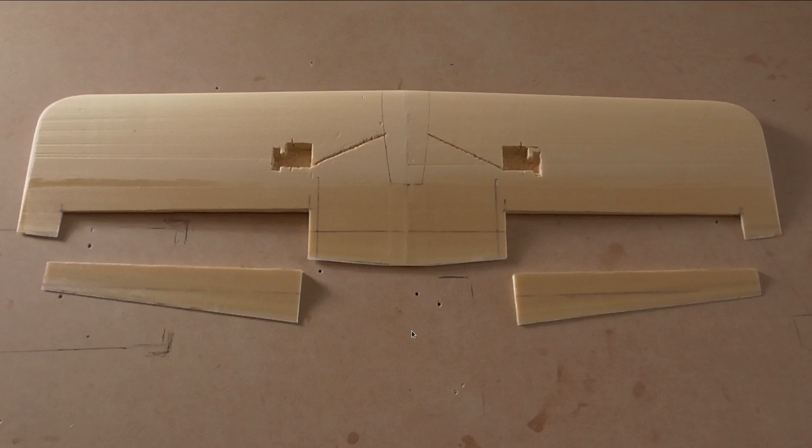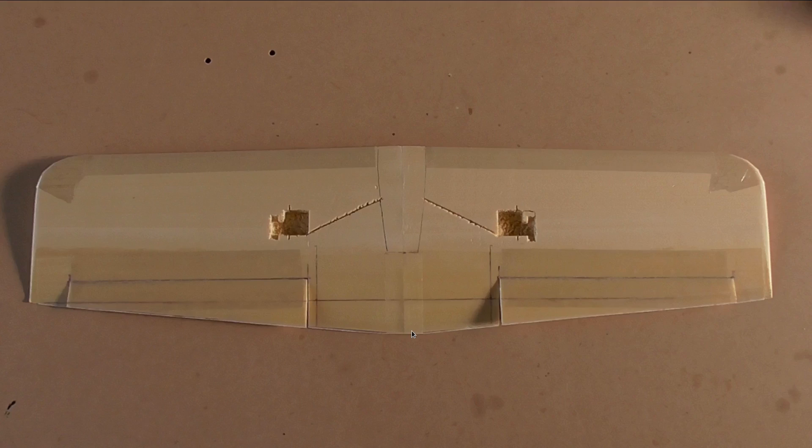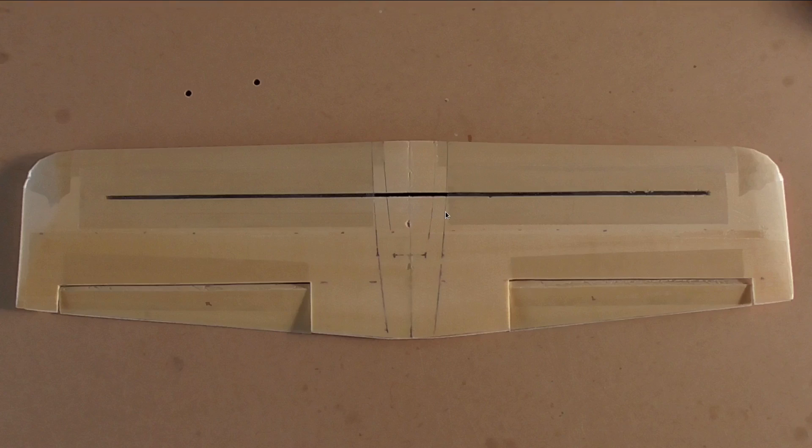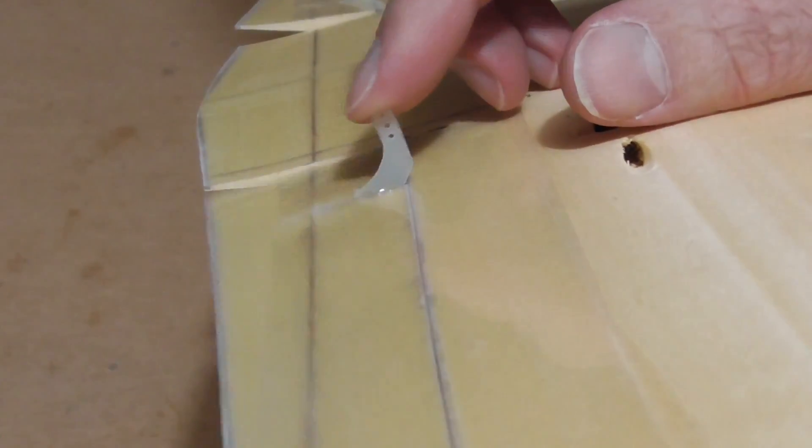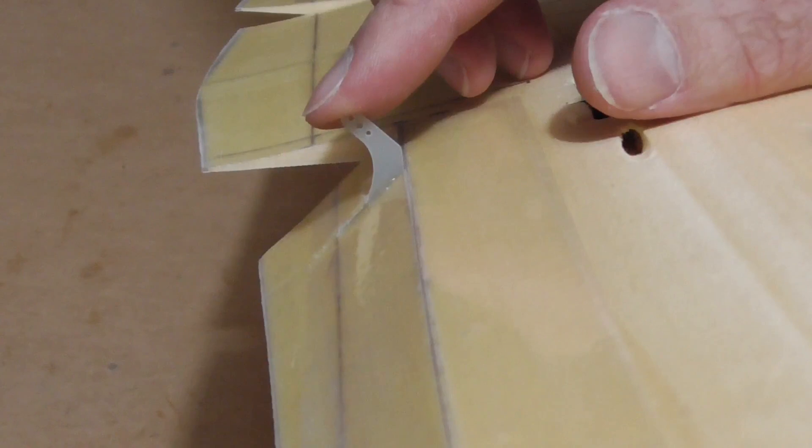And so now I've cut the elevons out and stuck them back in with packing tape hinges. I put some packing tape on the leading edge and a little bit of ordinary sellotape around the corners here just for a little bit of protection. And on the bottom I also covered the spar with packing tape. I made some little control horn linkages on the CNC machine again and they fit in there quite nicely.